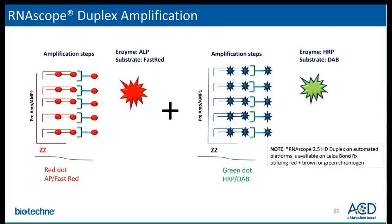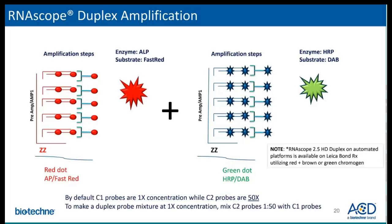A brief overview of the duplex amplification: both probe channels have independent amplification trees. The channel 2 associated amplification tree utilizes alkaline phosphatase enzymes and fast red substrate for visualization of the marker. A separate amplification tree is built for the C1 channel, which utilizes HRP enzymes and green substrate. Please note that C1 probes by default are ready to use and 1x in concentration, while C2 probes are provided as 50x stocks. To make a duplex probe mixture, combine the C2 probe with C1 probe at a 1:50 dilution.